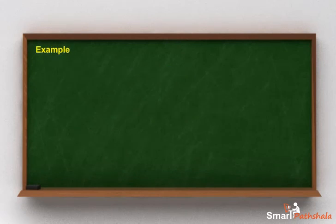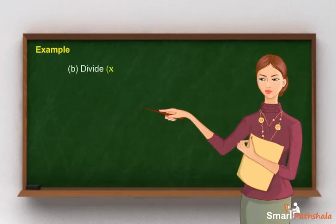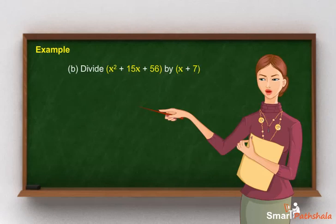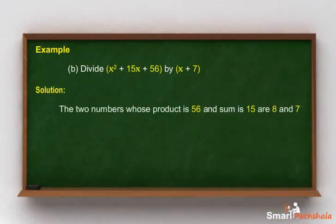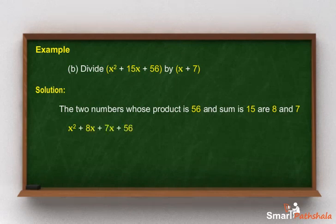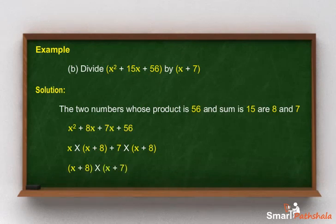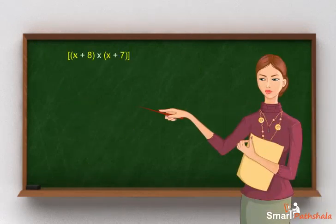Divide x squared plus 15x plus 56 by x plus 7. Solution: we will find the factors of x squared plus 15x plus 56. The two numbers whose product is 56 and sum is 15 are 8 and 7. So x squared plus 15x plus 56 equals x squared + 8x + 7x + 56, which factors as x(x + 8) + 7(x + 8), giving (x + 8)(x + 7). Dividing by (x + 7) gives x plus 8.